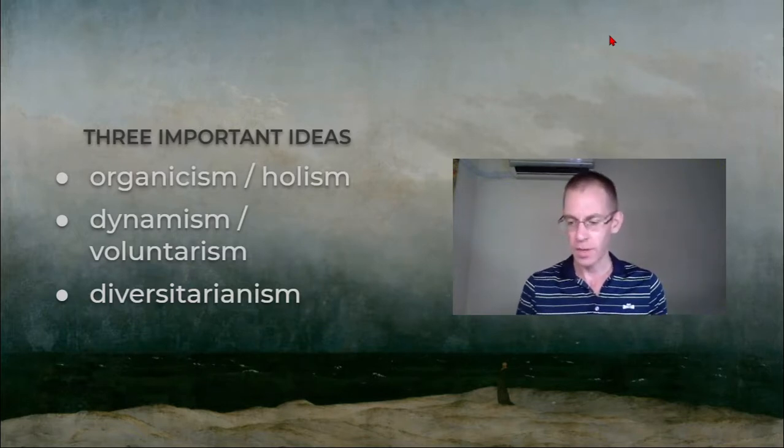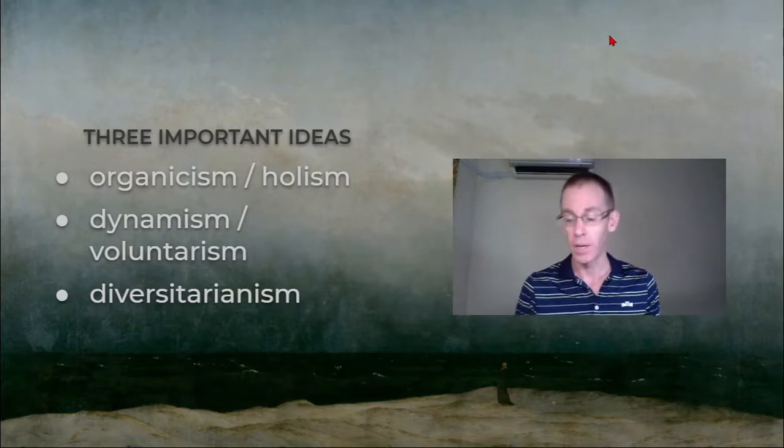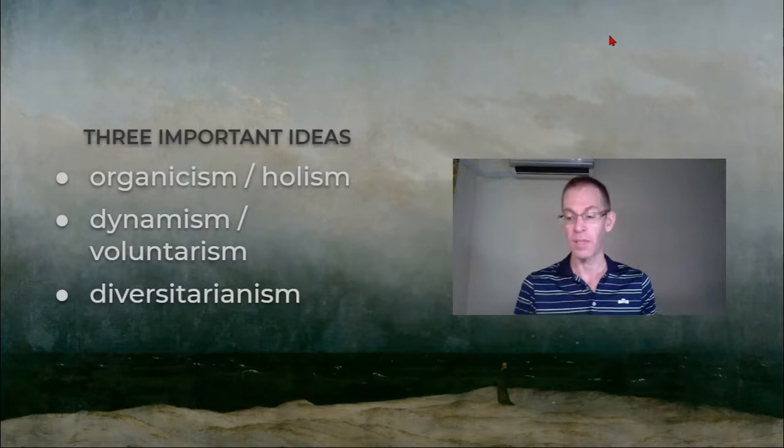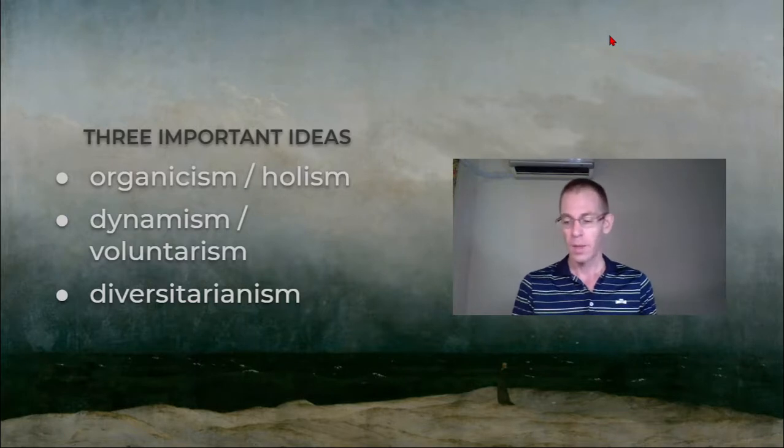But for the Jena romantics, it came to seem that the diversity of peoples and institutions and societies was natural and desirable and good. There is no best standard way to be human. Aesthetically speaking, content is more important than form.